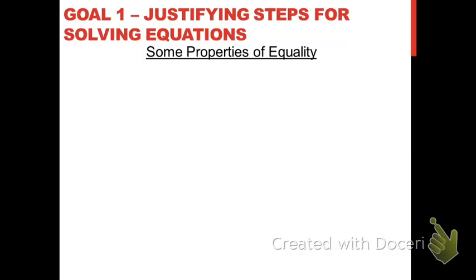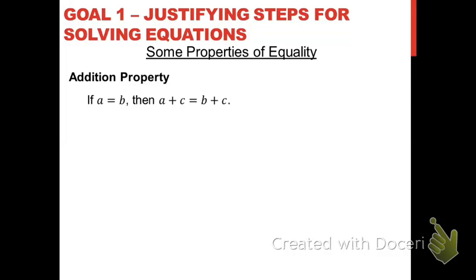The first property of equality you're going to want to know about is called the addition property of equality. All these properties of equality are things that you can do in order to rearrange an equation, and they're all used for solving equations. If you have an equation a equals b, then according to the addition property of equality, a plus c is equal to b plus c.